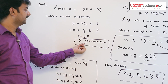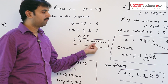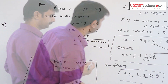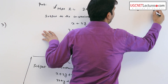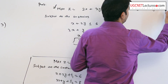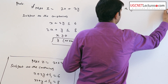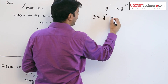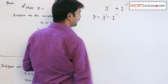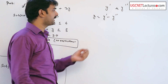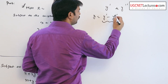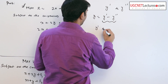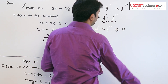Here, y has no restriction. For reducing to standard form, we introduce y-dash and y-double-dash such that y is written as y-dash minus y-double-dash. In this way, the sign of y depends upon the difference between y-dash and y-double-dash, where y-dash and y-double-dash are both non-negative.